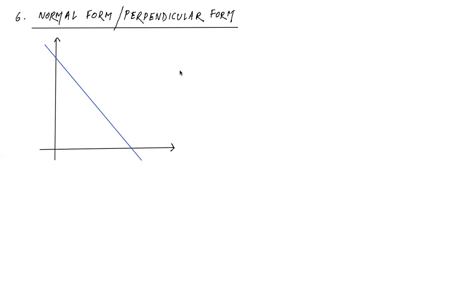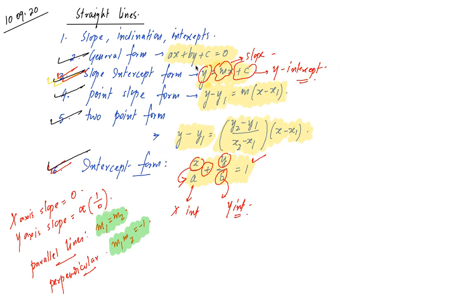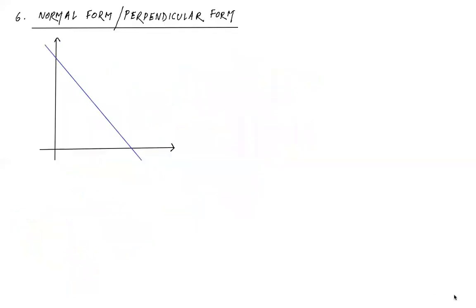For any straight line we need two values: slope-intercept form needs slope and intercept; point-slope needs a point and slope; two-point form needs two points; intercept form needs x-intercept and y-intercept. Without two data points you cannot proceed. In normal form or perpendicular form — both names refer to the same thing — we also need two data values, but of a peculiar type. From the origin, a perpendicular is dropped onto the straight line.